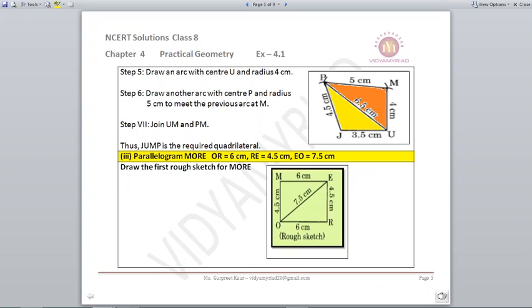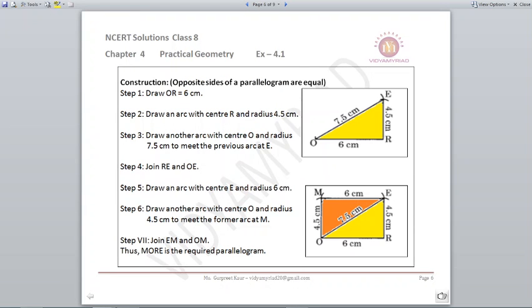We are given RE as 4.5 cm which means MO will also be 4.5 cm according to the property of parallelogram. Again we will follow the same method which we have done in the previous questions. Now what we will do is first draw the line OR as 6 cm and take your compass and scale. Mark the measurement 7.5, cut an arc and from arc mark the measurement 4.5, cut an arc. Wherever they both cut mark it as E, that will be E point.